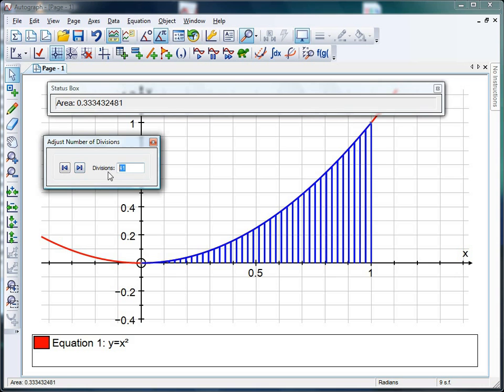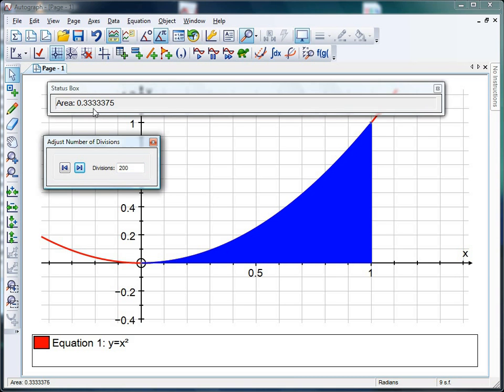If I can't be bothered with all that clicking, I can just cut straight to the chase: 200. And you get something that seems to be quite close to a third.